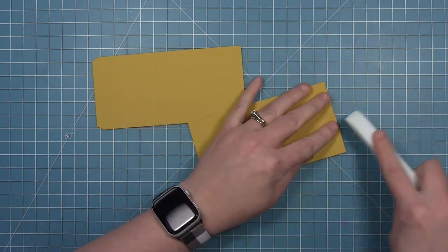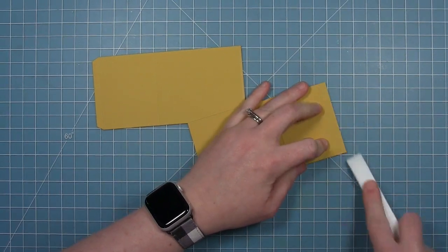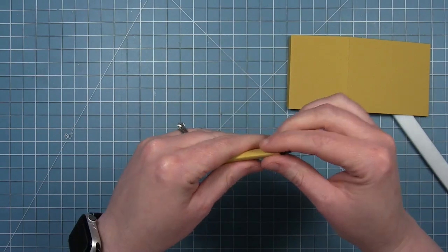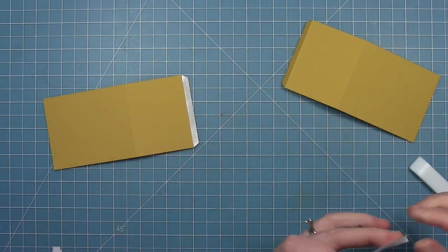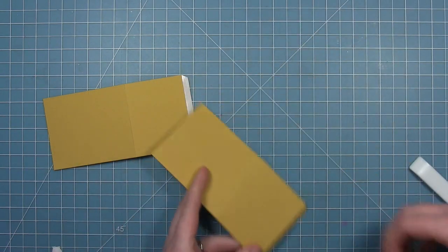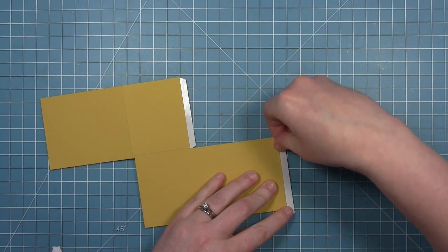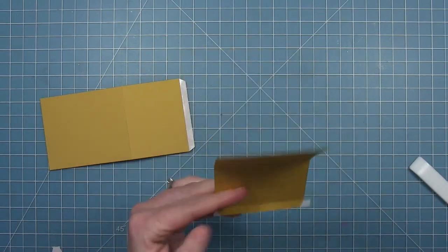So you want to fold on that big fold, and then you also want to fold the flap, and you want to do this to both pieces. So once those are all nice and scored, I'm also going to add some adhesive tape to those little flaps.